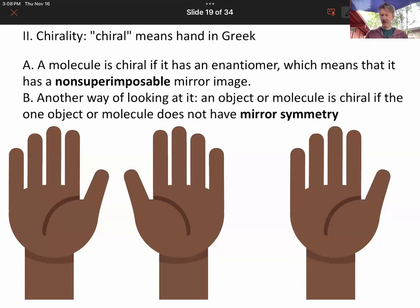And if you look at two hands, as shown here, then we said they're chiral. We said chiral means hand. That's in a mirror. There are non-superimposable mirror images.